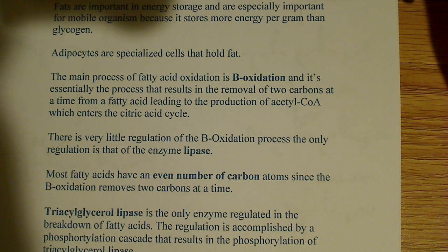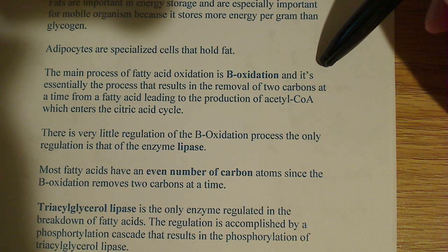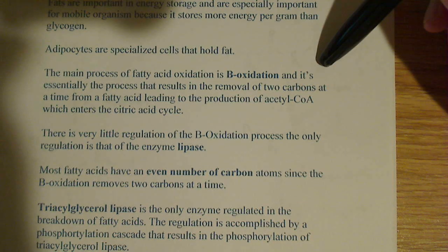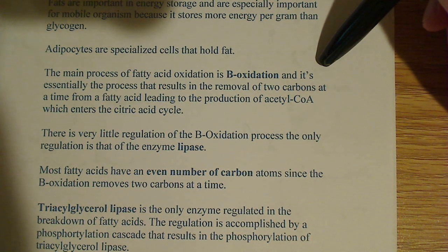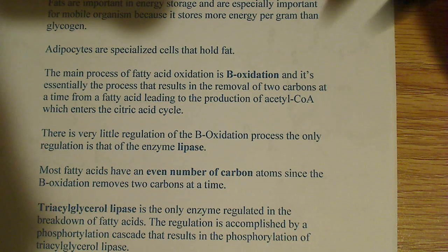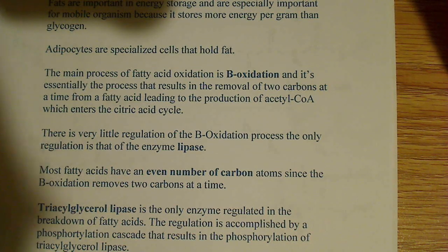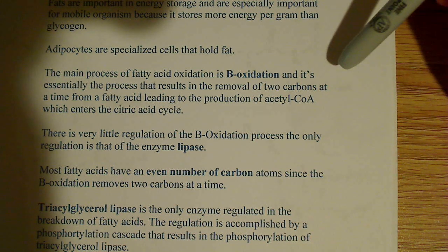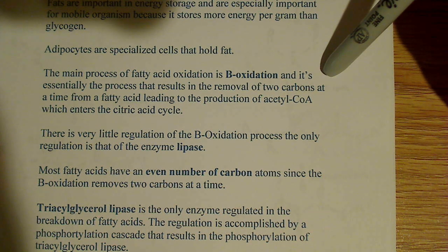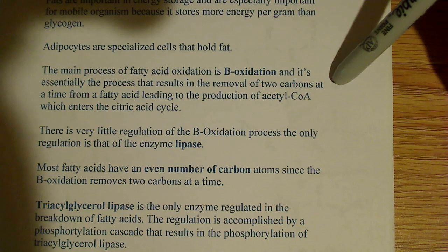The main way fatty acids are broken down is by a process called beta-oxidation. It's essentially the process that results in the removal of two carbons at a time from a fatty acid, leading to the production of acetyl-CoA. Acetyl-CoA is that central molecule that enters the citric acid cycle, where many different pathways converge, producing a lot of ATP via oxidative phosphorylation.